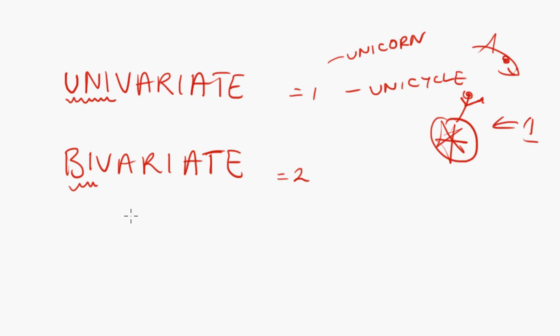Bi meaning two would of course be, for example, a bicycle. Bi-cycle, we have two wheels. And they are working together in harmony with the dude sitting on the top waving at us. Terrible, terrible drawing. I'm not an artist.